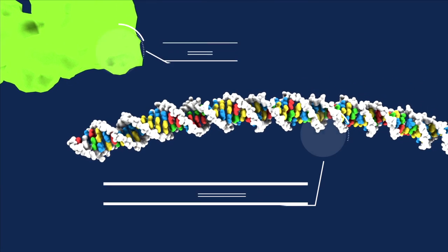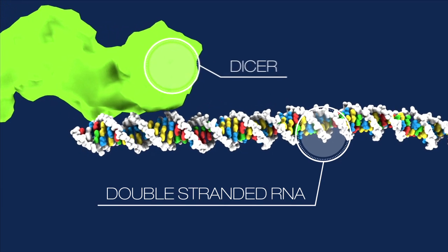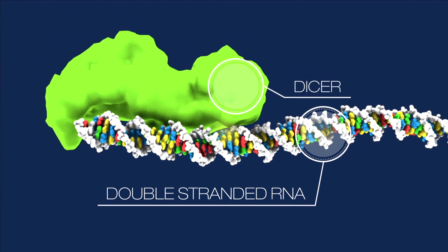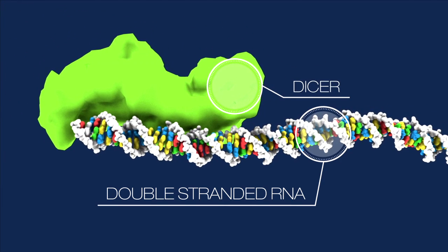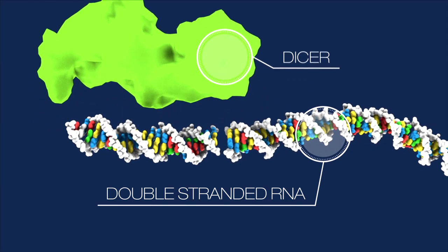Cells make a protein called Dicer. It's always on the lookout for double-stranded RNA, which is used by many viruses, but rarely by cells. When Dicer finds this RNA, it dices it up.